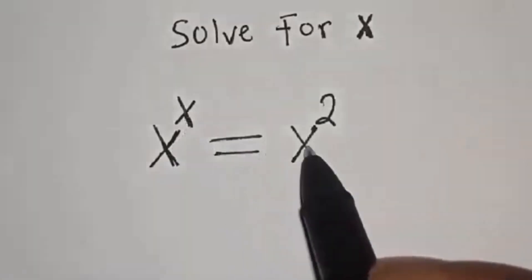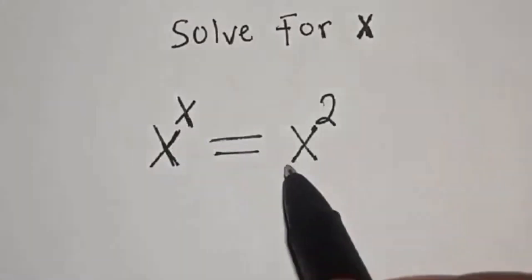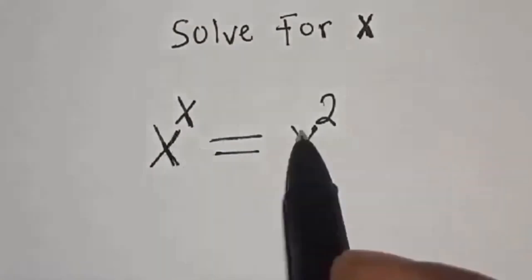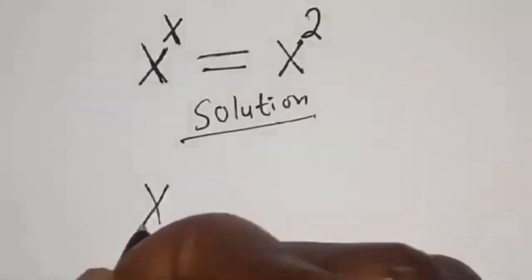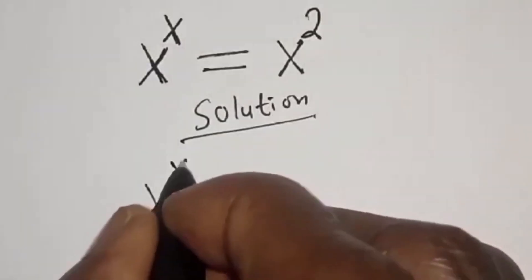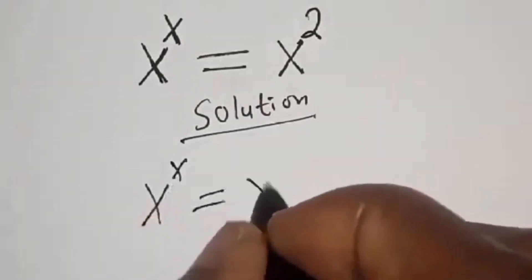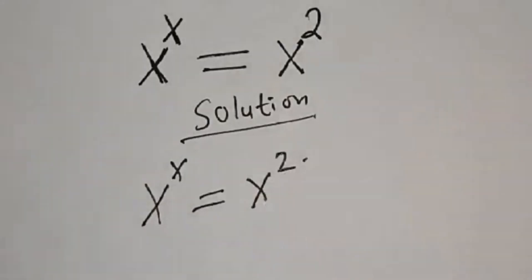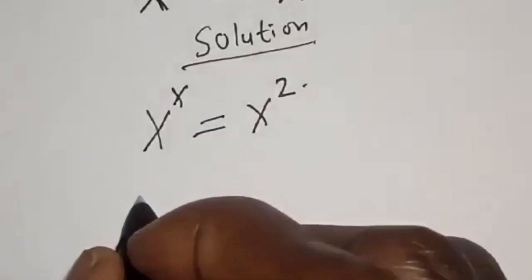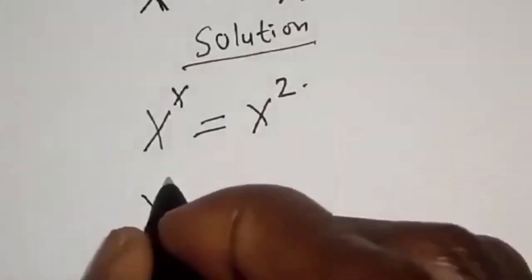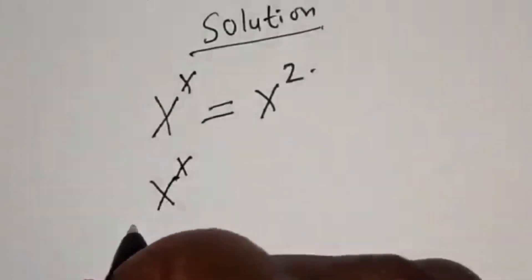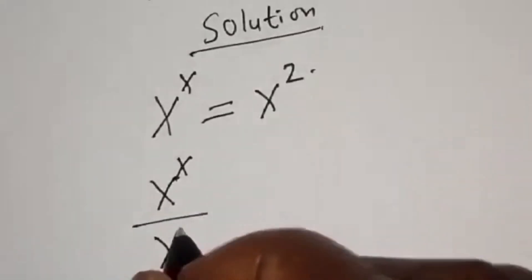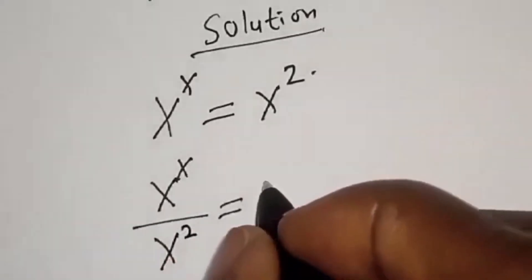We have the equation s raised to power s is equal to s squared. I want to look at how we can quickly find the value of s from this equation. Let's divide both sides by s squared: s raised to power s divided by s squared is equal to s squared divided by s squared.